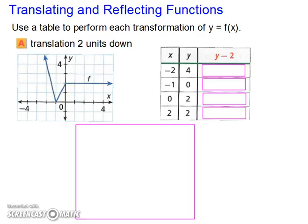Let's practice. Translating and reflecting functions. Use a table to perform each transformation of y equals f(x). Tables are often very helpful when it comes to these problems. That way you can see exactly what you need to plot and then how to draw the graph. So we have x, we're starting with -2 at 4, so if we double check, -2 is at 4, -1 is at 0, 0 is at 2, and 2 is at 2.